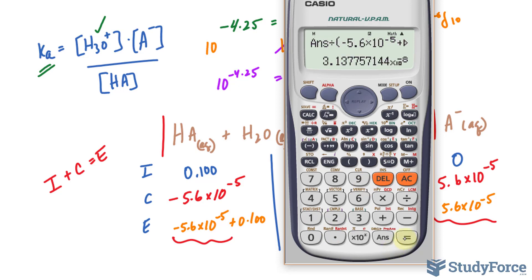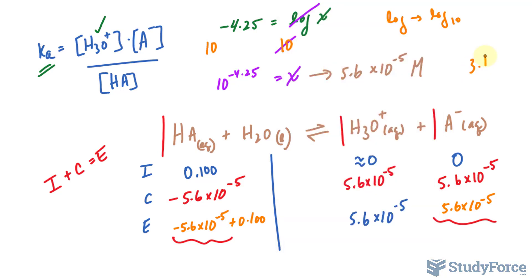This gives us a Ka value of 3.13, and we need this to two significant figures, so 3.1 times 10 to the power of negative 8.